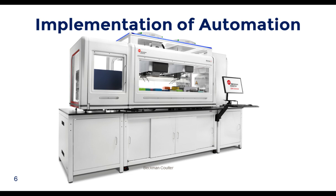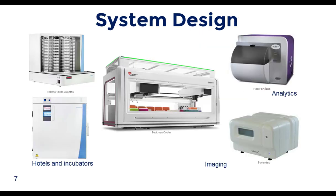One way to address decreasing resources while handling increased clone throughput is automation. Process steps like incubation, plate imaging, and clone evaluation can be integrated with liquid handling scale-up steps, allowing more clones to be processed with fewer resources. The automation system includes a liquid handler at its core, integrated with ambient storage hotels, incubators, imaging devices for monoclonality or growth monitoring, and analytics devices. All or part of the system can be enclosed in a laminar flow enclosure to maintain sterility.